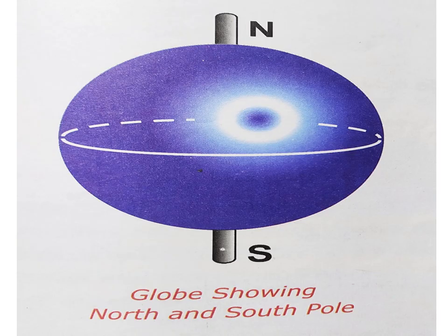As we can see, the globe rotates on its axis having two end points or poles. The point at the top is called the north pole, and the point at the bottom is called the south pole. Imaginary lines in the form of full and semi circles can be drawn on the globe.